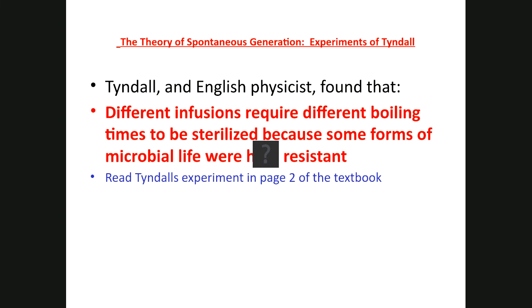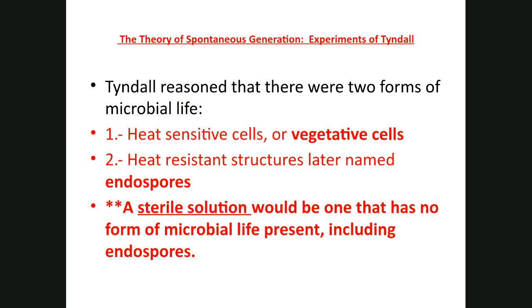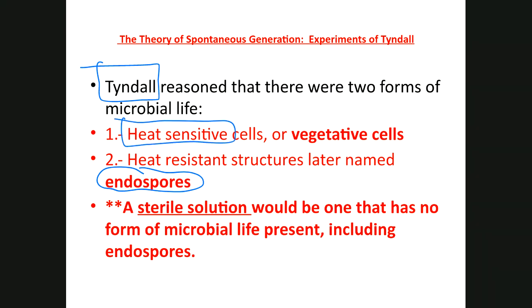An important concept is endospores. Other scientists tried to replicate Pasteur's gooseneck flask experiment and were not successful — their solution after being heated was getting contaminated and they couldn't figure out why. Tyndall finally figured it out. He reasoned that there were many different types of microorganisms, some of them heat-sensitive. The way he explained it was that some cells were heat-sensitive — which is to some extent correct, but not entirely.